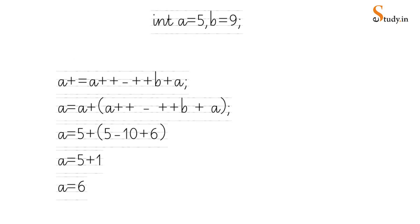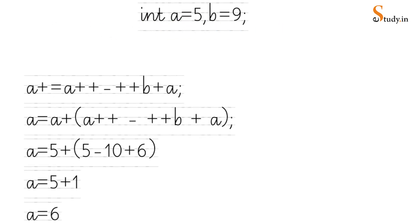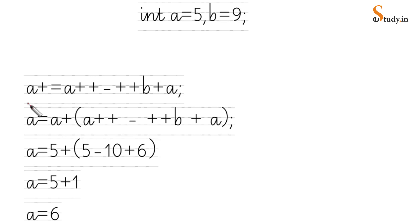Next example: a = 5, b = 9. The expression uses the shorthand assignment operator: a += a++ - ++b + a. This is a very common exam question. The shorthand operator a += means a = a + (the rest of the expression). So when you open this expression, it becomes: a = a + (a++ - ++b + a).